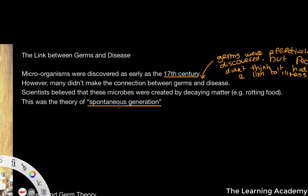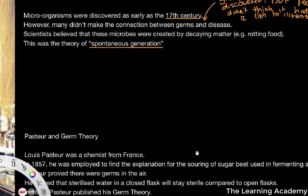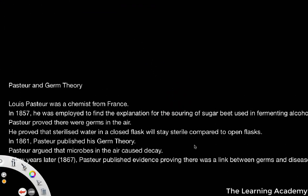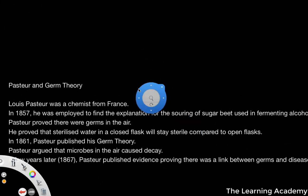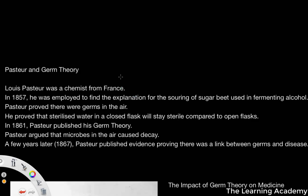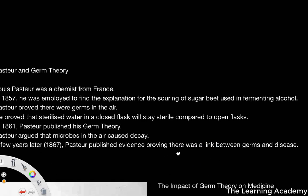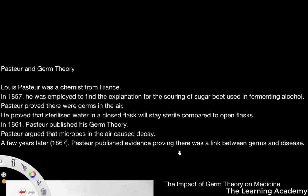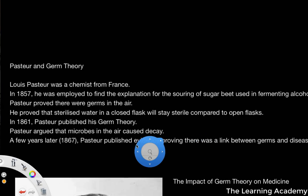The theory of spontaneous generation existed from as early as the 17th century. Louis Pasteur, however, was a chemist from France. And in 1857, he was employed to find the explanation for the souring of sugar beet used in fermenting alcohol.